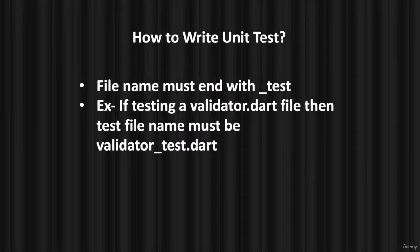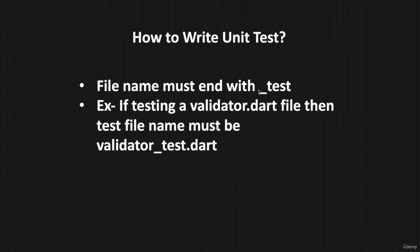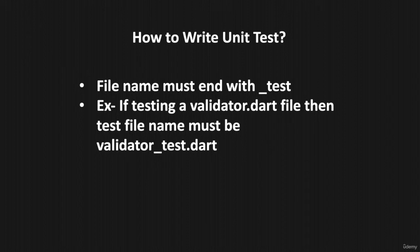In Flutter, we have three types of tests: unit test, widget test, and integration test. For all these tests, you have to create a new file whose name must end with underscore test. So for example, if you are testing a validator.dart file for validating your email ID or password, then your test file name should be validator_test.dart. This rule applies to widget testing, integration testing, and unit testing as well.